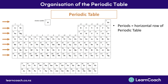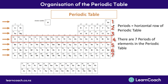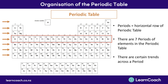First of all, when looking at the periodic table we need to think about what a period is. A period is a horizontal row of the periodic table — for example, this is a period here indicated in red. There are seven periods of elements on the periodic table, and as part of this video we're going to look at the trends that occur across a period, meaning as you move along from left to right.